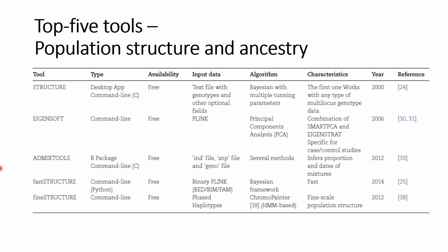For population structure and ancestry, the first tool is Structure, which we also covered in one of the videos on this channel. Then Eigensoft, Admixtools, FastStructure, and FineStructure are listed as very popular for population structure analysis. Some of them are desktop applications and R packages supporting a number of input data possibilities. My personal favorites are always those using PLINK input, because then it's very easy to prepare data for them, and data preparation is one of the most time-consuming elements of the analysis.